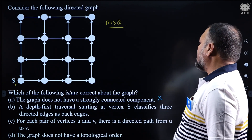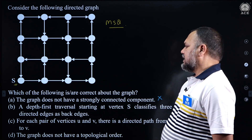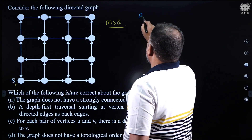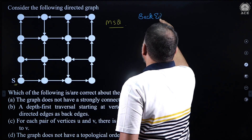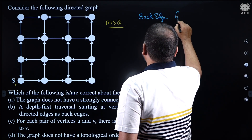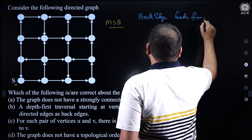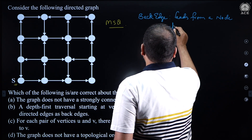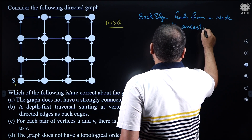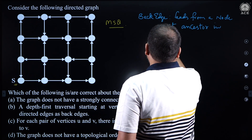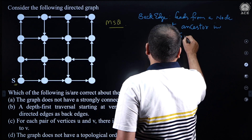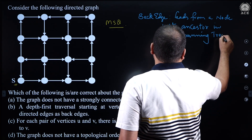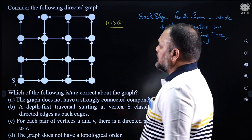A depth first traversal starting at vertex S classifies three directed edges as back edges. What is a back edge? A back edge leads from a node to its ancestor in the DFS spanning tree.